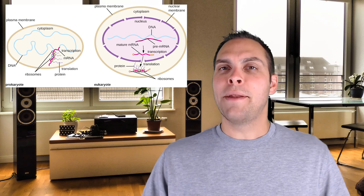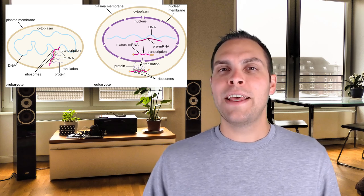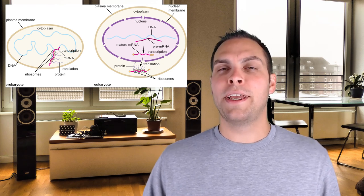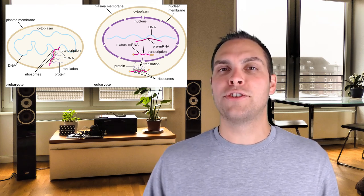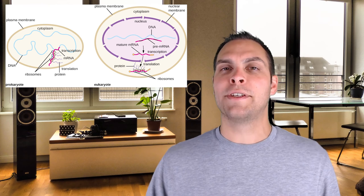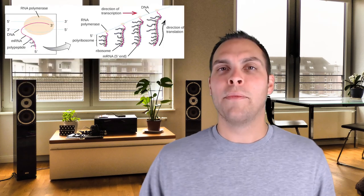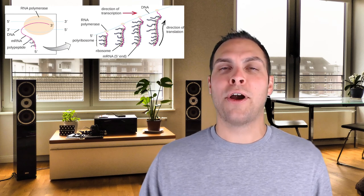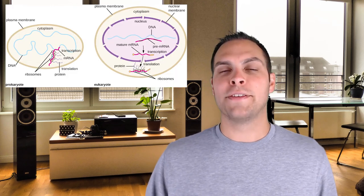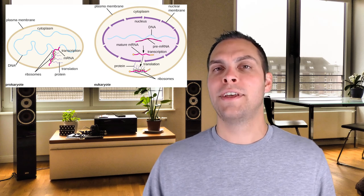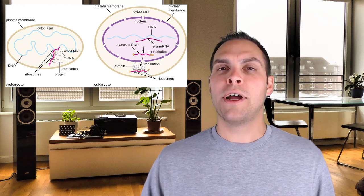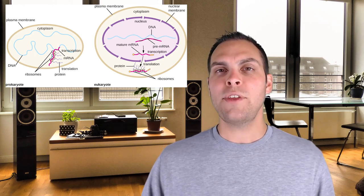How does this happen, and when does it happen? In prokaryotes, because they lack a nucleus and because their messenger RNAs are already mature to begin with, translation can begin even as transcription is still occurring. It's not uncommon to see in bacterial cells lots of different ribosomes already beginning to translate the messenger RNA before the transcriptional process is even done.